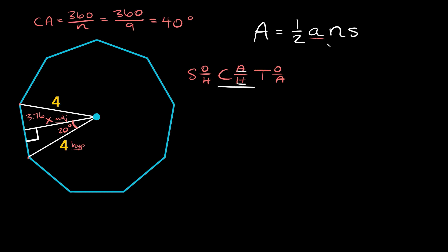Now we need to identify the remaining variables: n is 9, and we still need the side length. We can use trig again since we know the angles and hypotenuse. This short side is the opposite side relative to the 20-degree angle, the apothem is adjacent, and the hypotenuse is 4. The trig function relating the opposite side and the hypotenuse is sine.